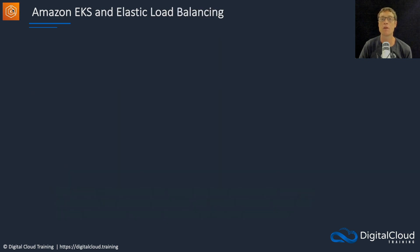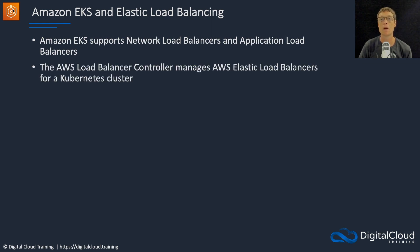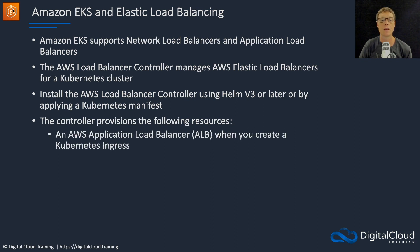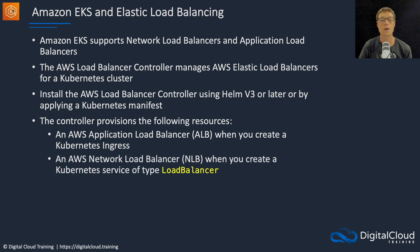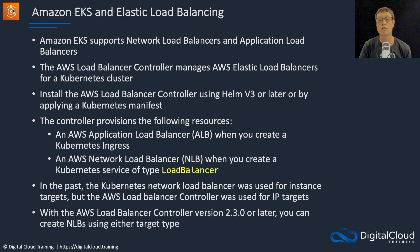EKS supports network load balancers and application load balancers. The AWS Load Balancer Controller manages elastic load balancers for a Kubernetes cluster. You install it using Helm v3 or later, or by applying a Kubernetes manifest. The controller provisions an AWS Application Load Balancer when you create a Kubernetes ingress, and a Network Load Balancer when you create a Kubernetes service of type load balancer. In the past, the Kubernetes NLB was used for instance targets while the controller was used for IP targets, but with load balancer controller version 2.3 or later, you can create NLBs using either target type.